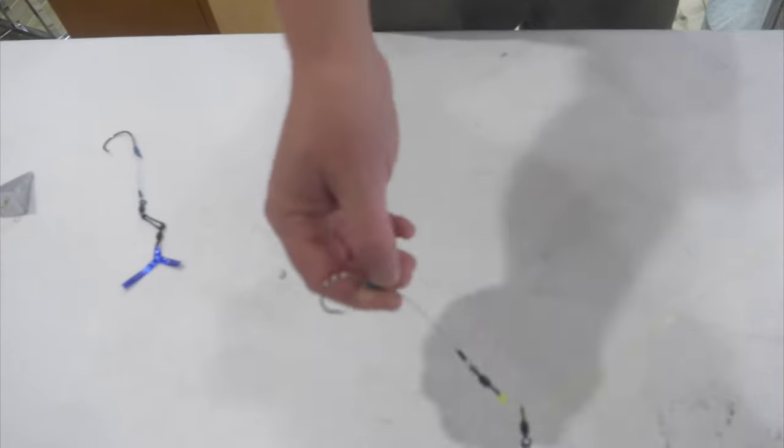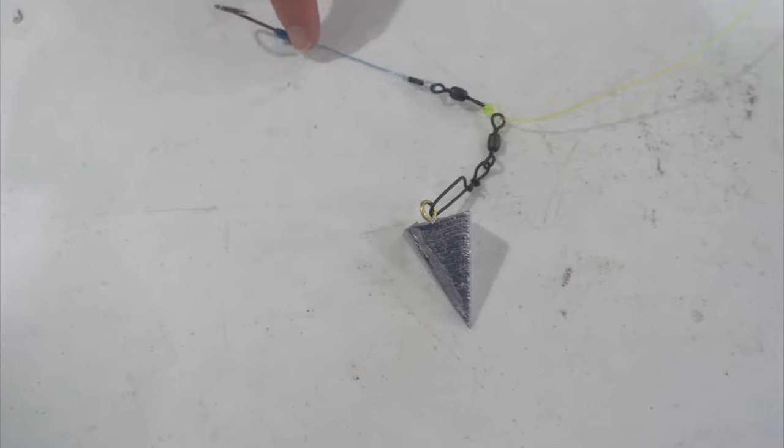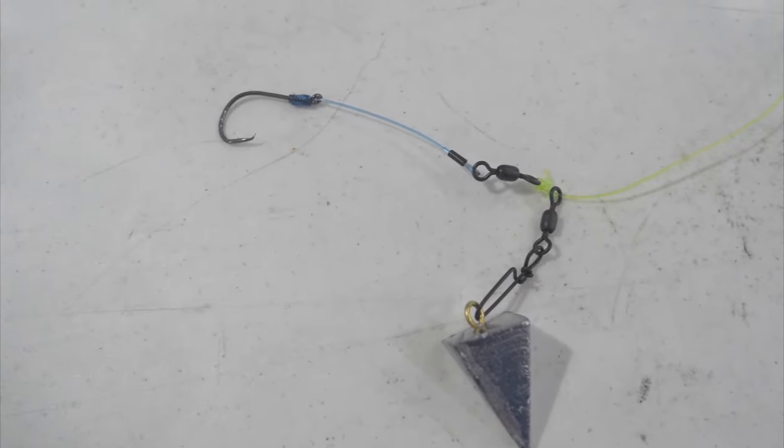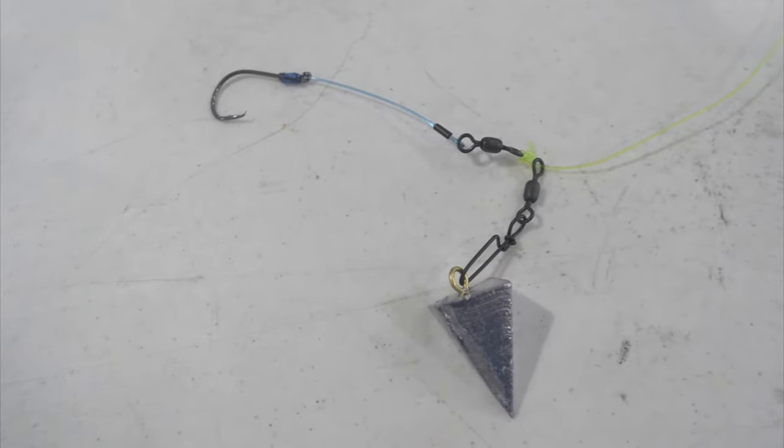This particular rig is the same thing as a normal fish finder rig, but you'll notice it's got a much smaller hook, so that would be a great one for puppy drum, even speckled trout, bluefish, and other stuff.